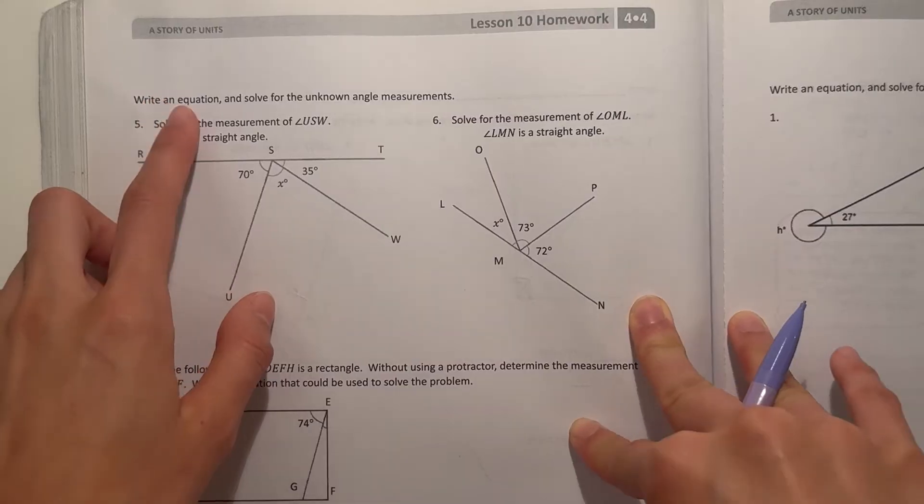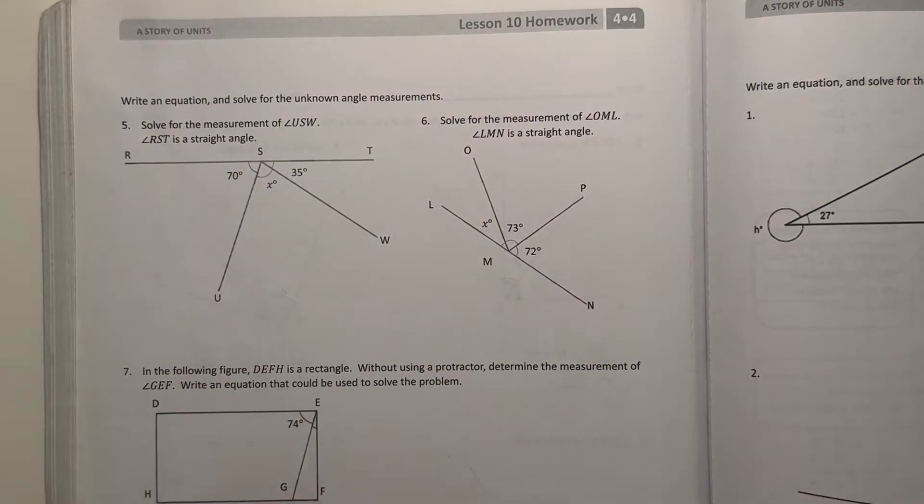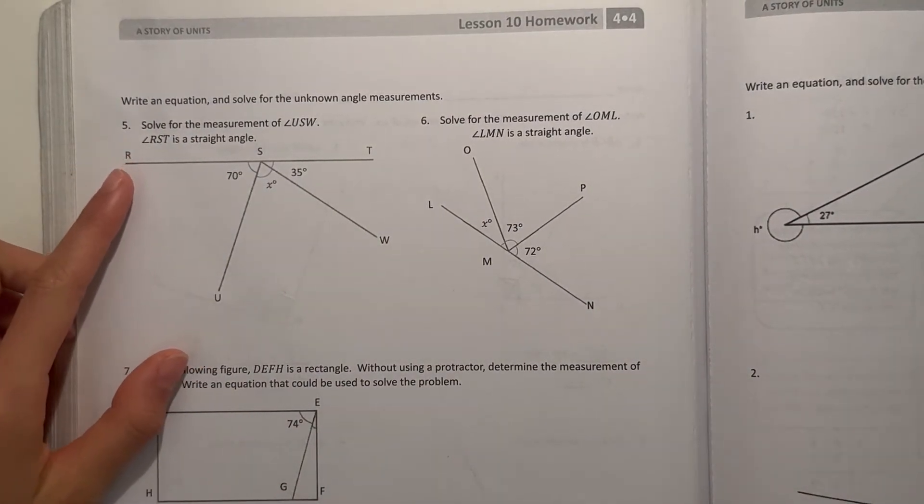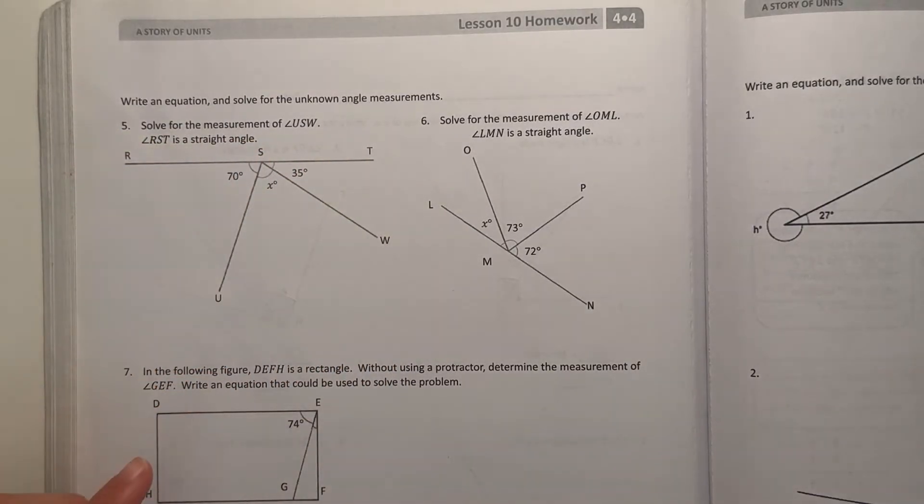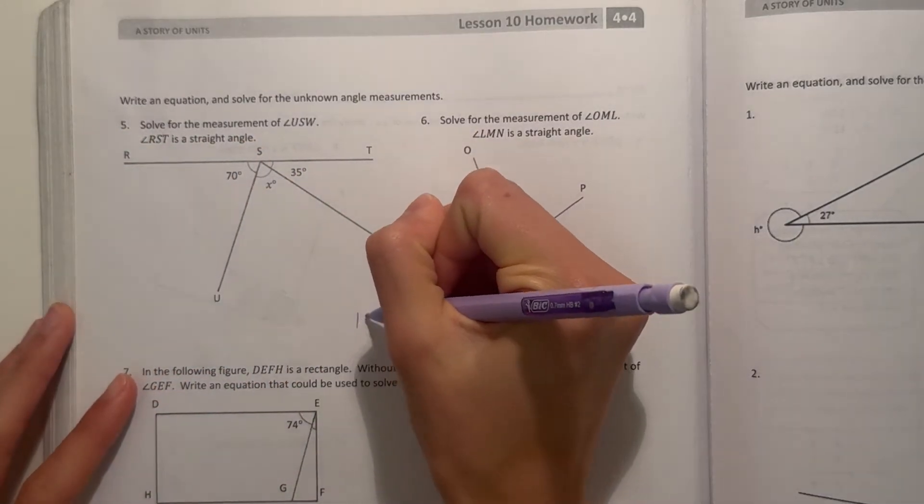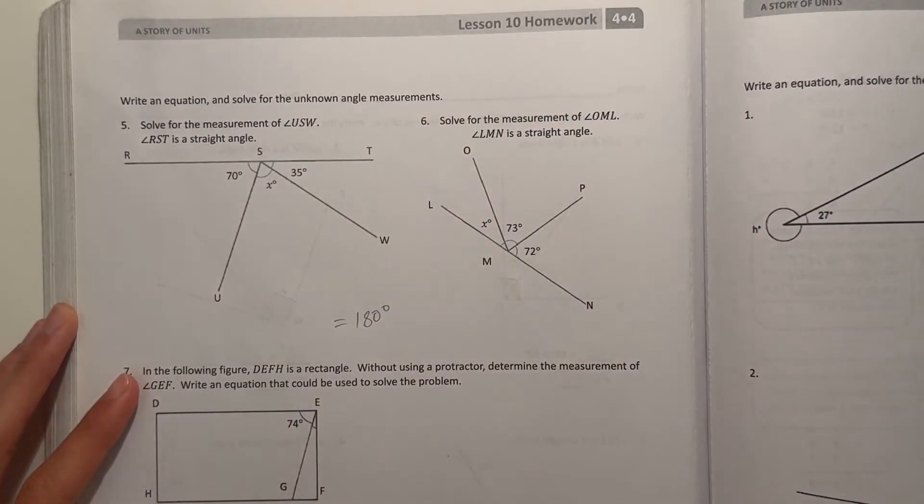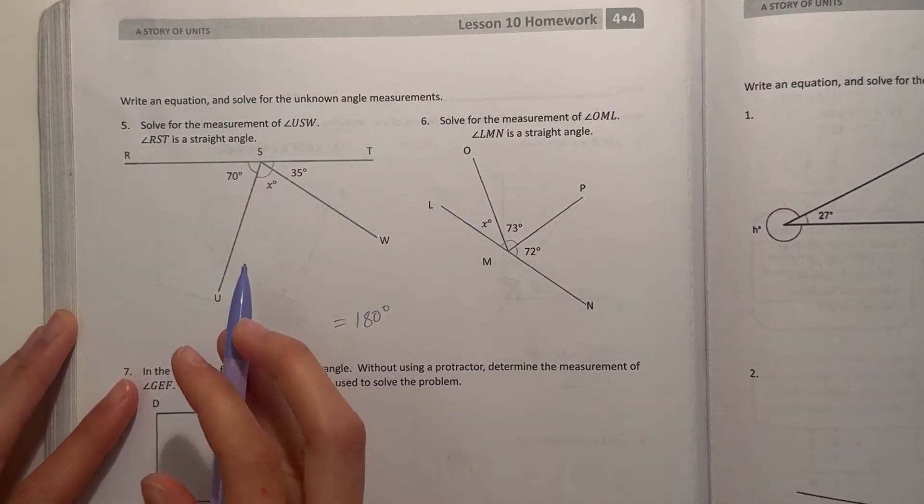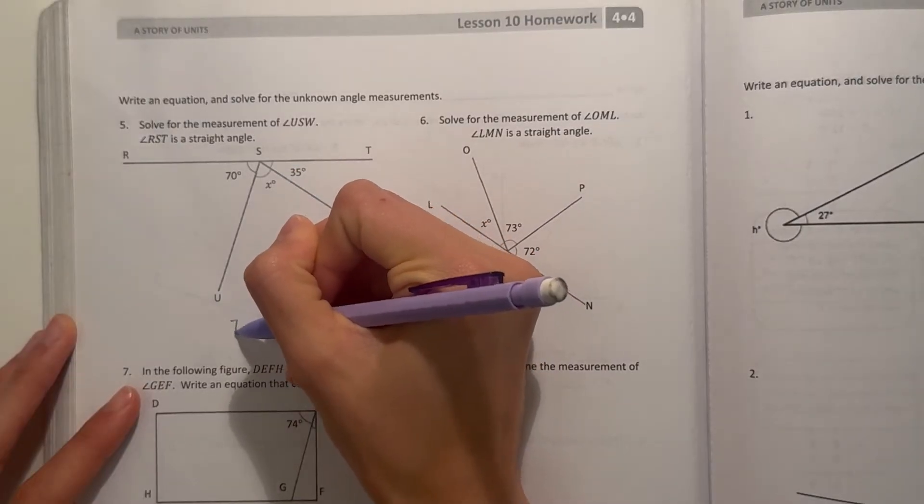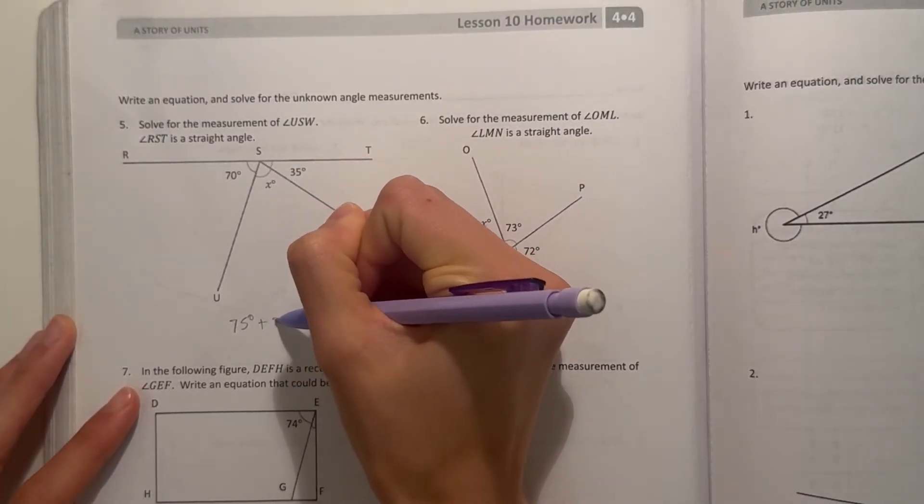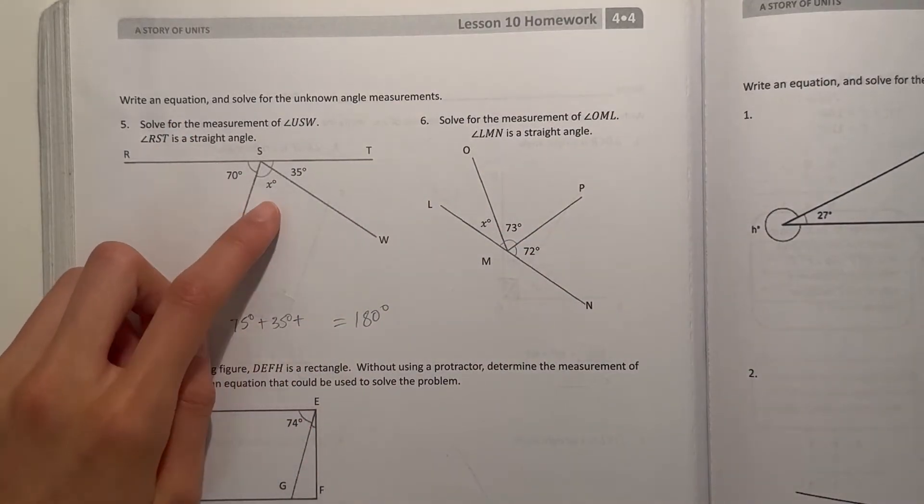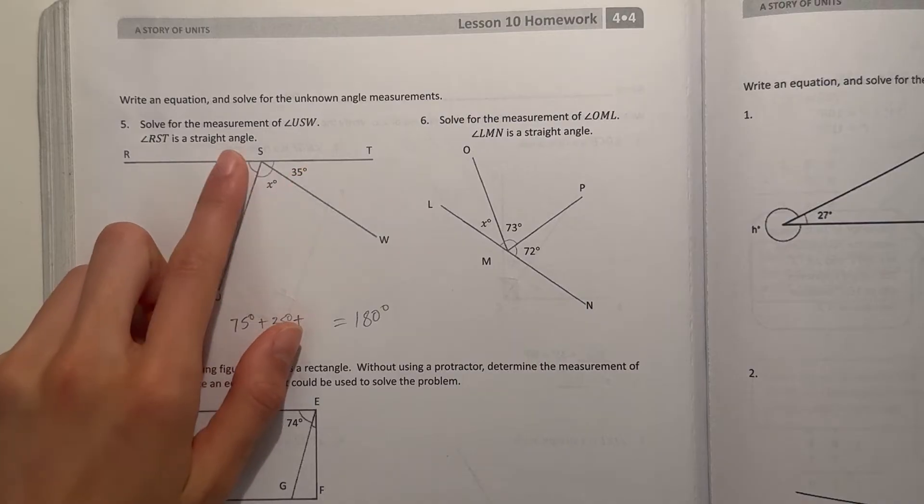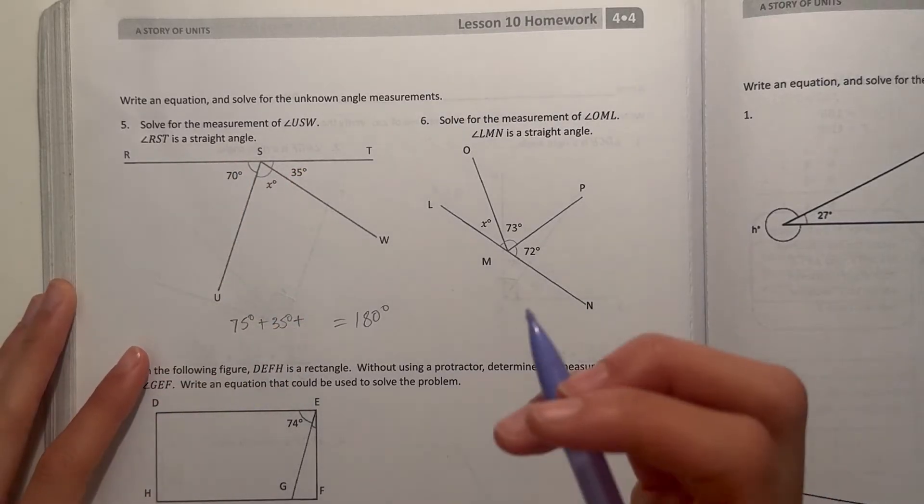Write an equation and solve for the unknown angle measurements. Number five, solve for the measurement of angle USW. RST is a straight angle. All right, so we have a line. That means everything needs to add up to 180. So we have 75 degrees plus 35 degrees plus blank. So whatever x is, it needs to add to 70 and 35 and make 180.